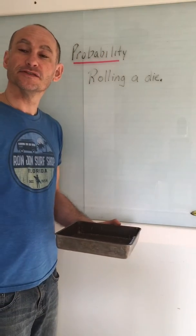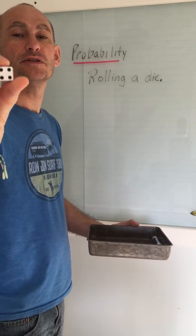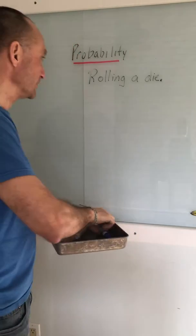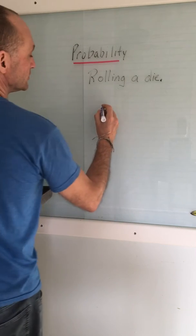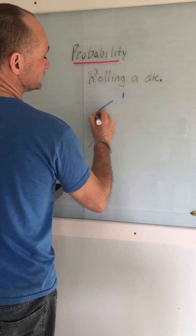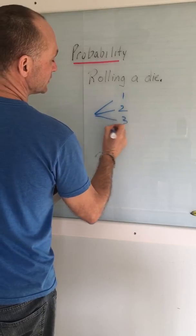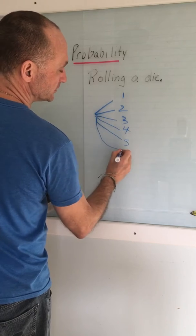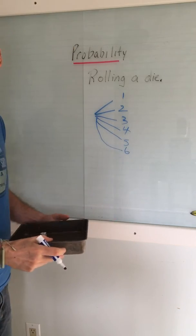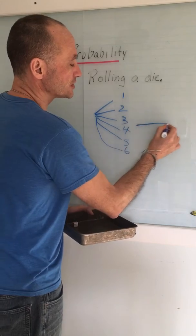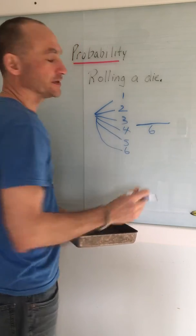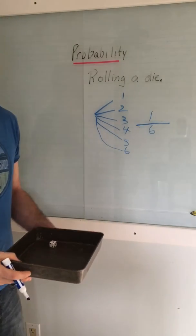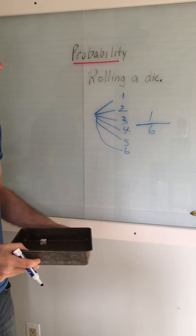So the die has six sides, all numbered correctly. So we have — you can get a 1, a 2, a 3, a 4, a 5, and a 6. So the total outcomes, or the total possible outcomes, are 6, and there's only one desirable outcome. So that gives you your fraction of 1 over 6.